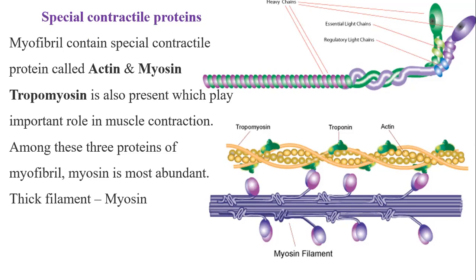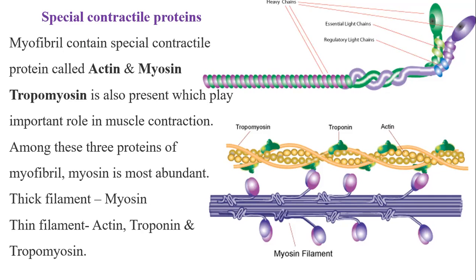These proteins contribute to the fibrillar structure of the muscle. As discussed in the electron microscopic structure of striated muscle, there are thick filaments and thin filaments. Thick filaments are made up of myosin, while thin filaments are made up of actin, troponin, and tropomyosin.